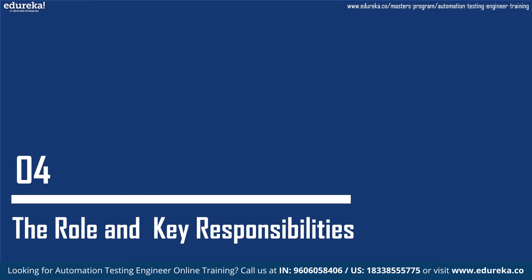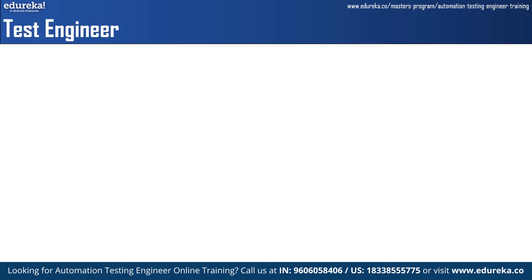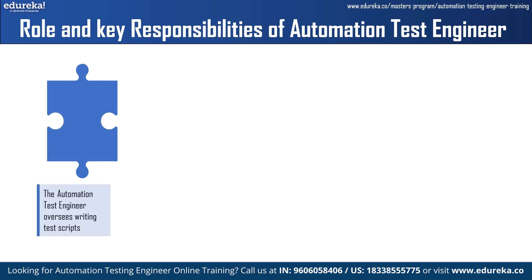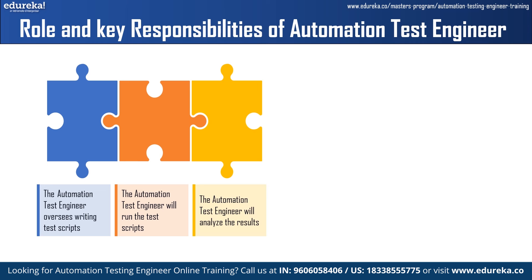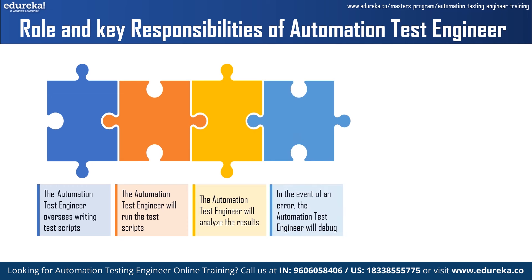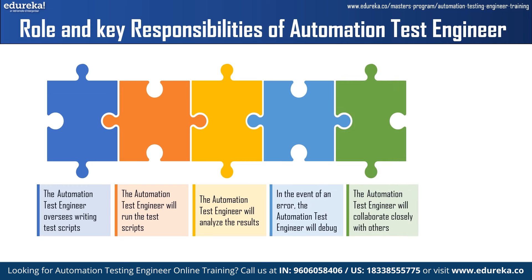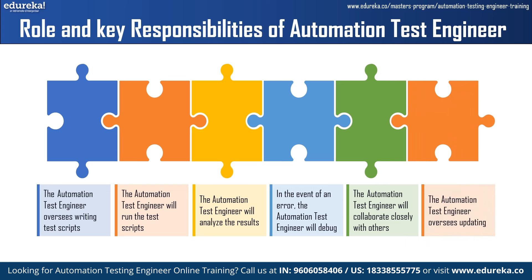An automation test engineer is in charge of writing test scripts that simulate user actions and test software functionality. They run the test scripts after they are developed to identify any defects or issues with the software product. They analyze the results of automated tests to determine whether the software is functioning as expected. In the event of errors, they investigate and debug the automated test scripts or the software product itself. They collaborate closely with the development team to identify defects, recommend improvements, and ensure product quality. They also update automated test scripts to reflect changes in the software product as needed.